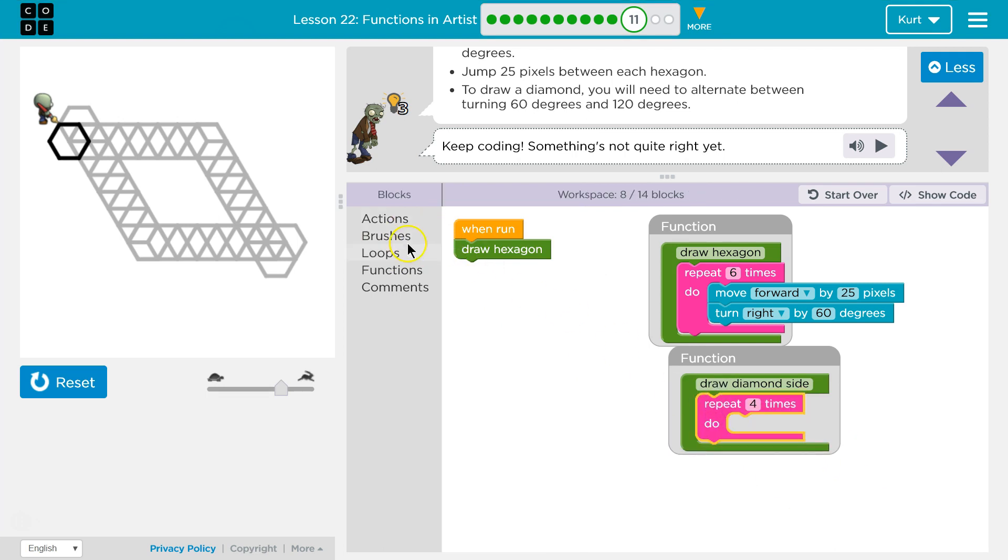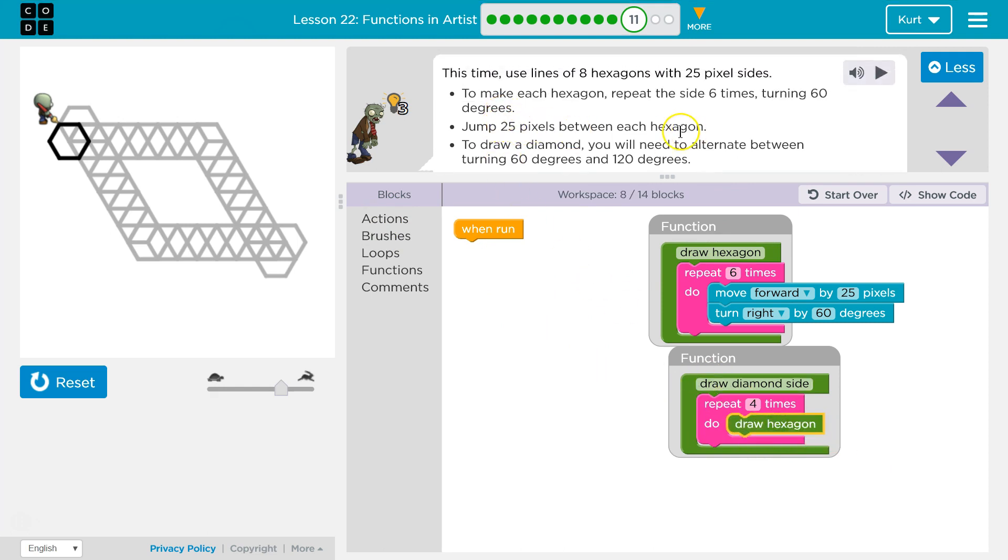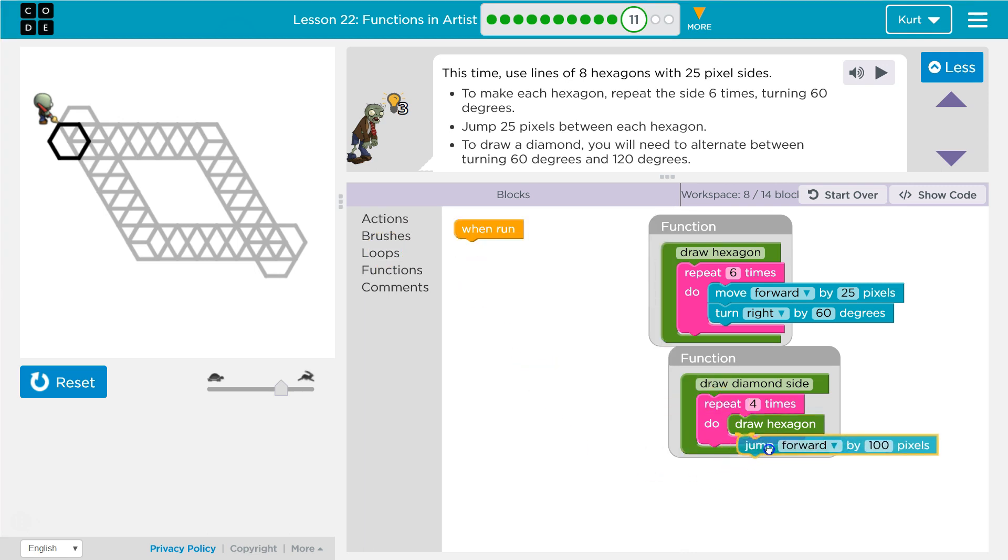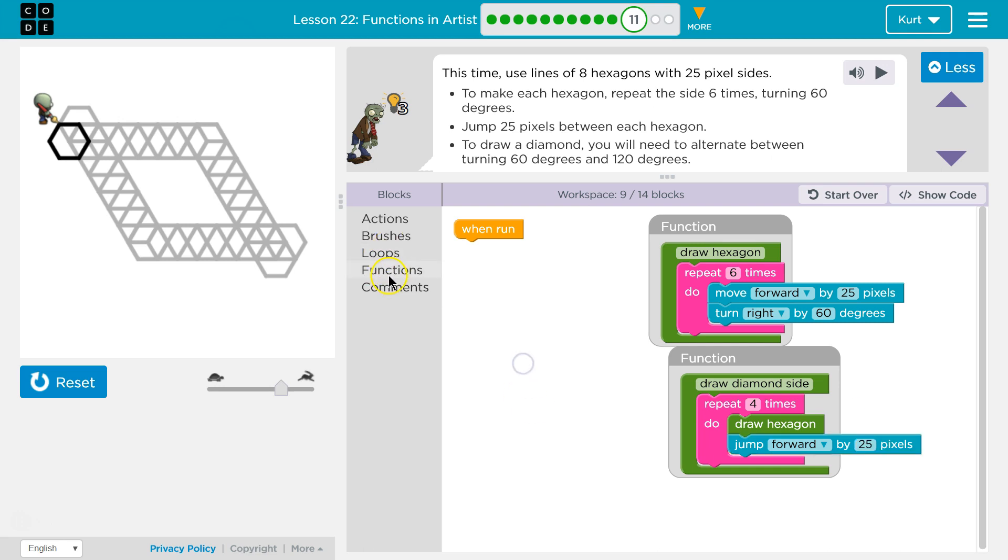Let's use a loop. We're going to have to test some stuff out here. And what do we want to do? Well we're going to draw a hexagon. And then did it say jump 25 between each? But what do I turn? I'm just going to try that honestly. So jump forward 25.